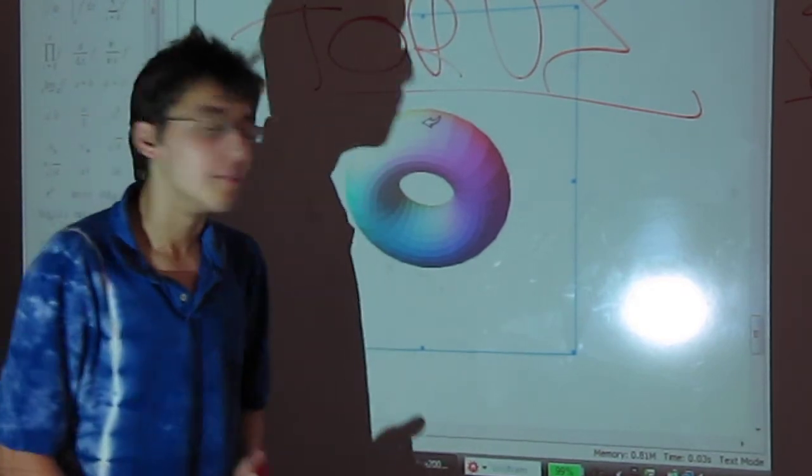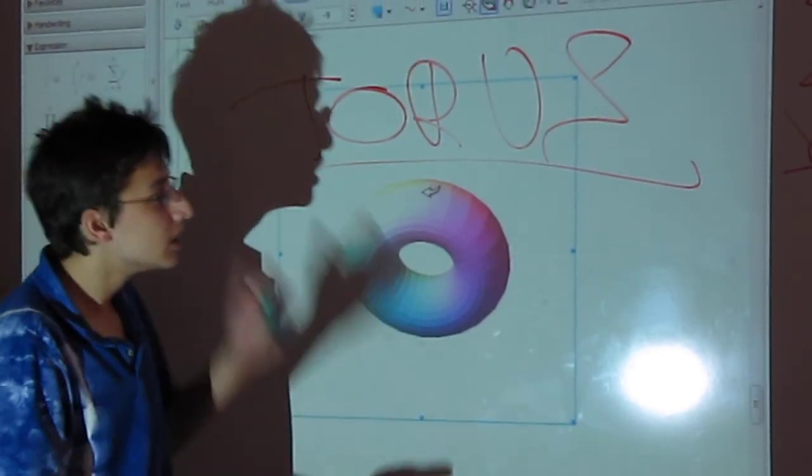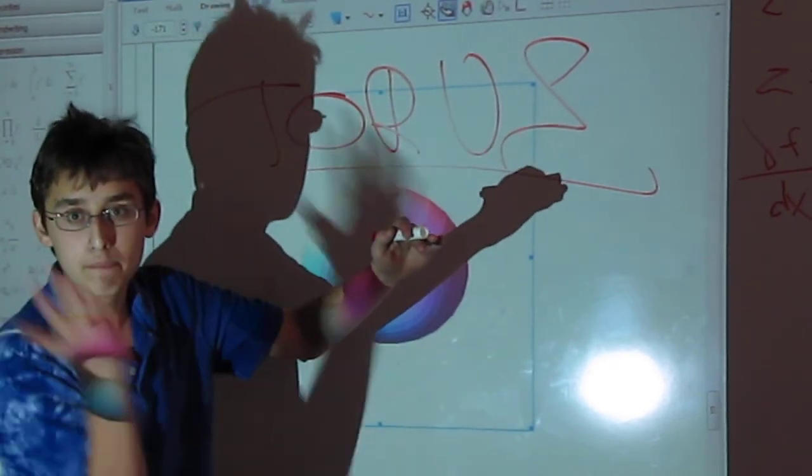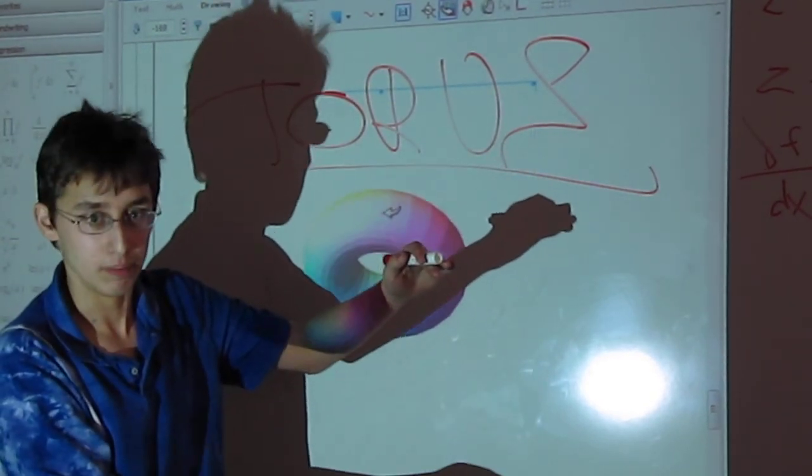So, to wrap up, we just used calculus to show that the top of the donut is the highest part of the donut, and the bottom of the donut is the bottom and lowermost. Thank you.